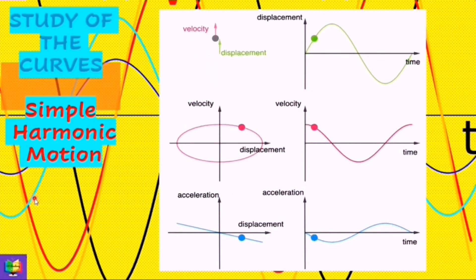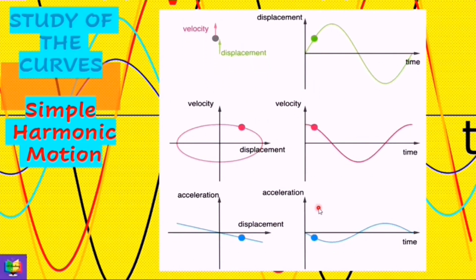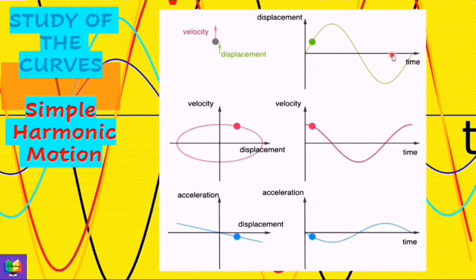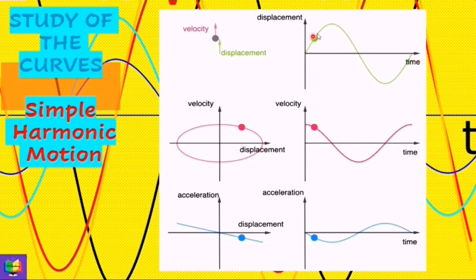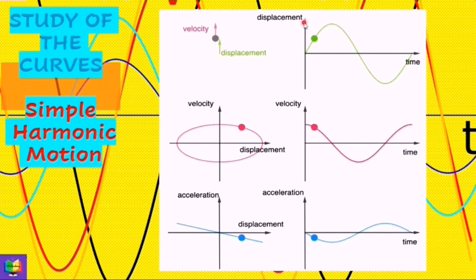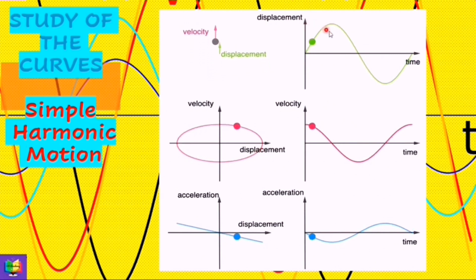We will examine the idealized graphs of displacement, velocity, and acceleration against time t for simple harmonic motion and see how the three graphs are related to one another. We will also compare the displacement-time graph of this idealized case with that of damped oscillations, and see that in the case of damped oscillations the amplitude decreases exponentially with time and the oscillator ultimately comes to rest. First, we look at the displacement-time graph.